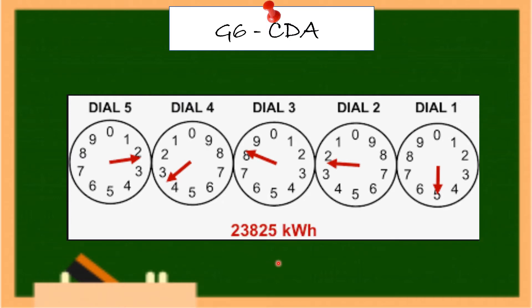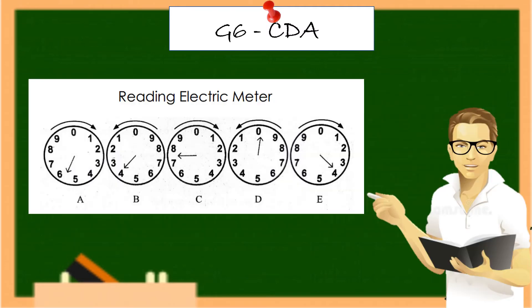As shown in this figure, the answer is 23,825 kilowatt-hours. Dial one reads five, dial two reads two, dial three reads eight, dial four reads three — not yet reaching four — and dial five reads two. So the answer is 23,825 kilowatt-hours. In an electromechanical meter, there are five dials, each with a pointer indicating the number to be read.